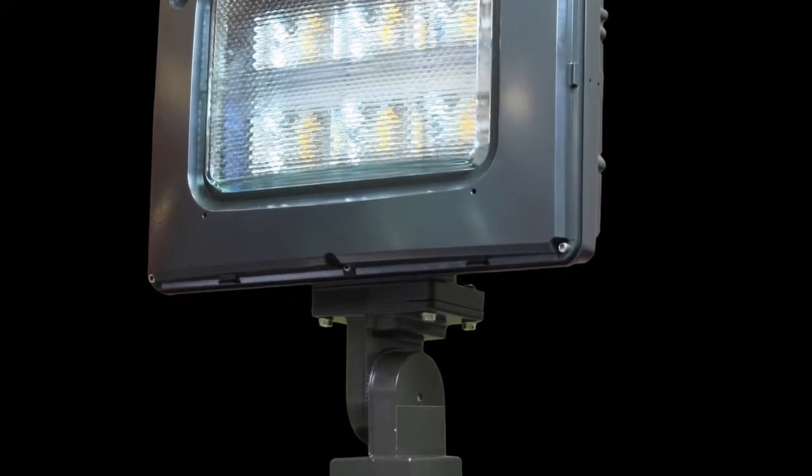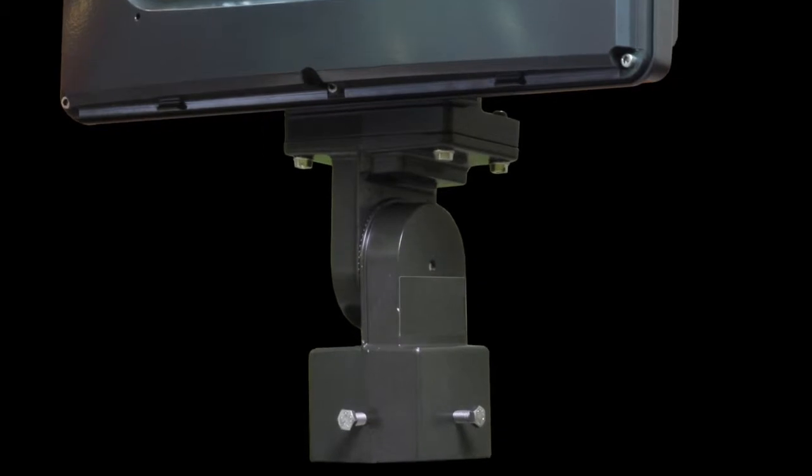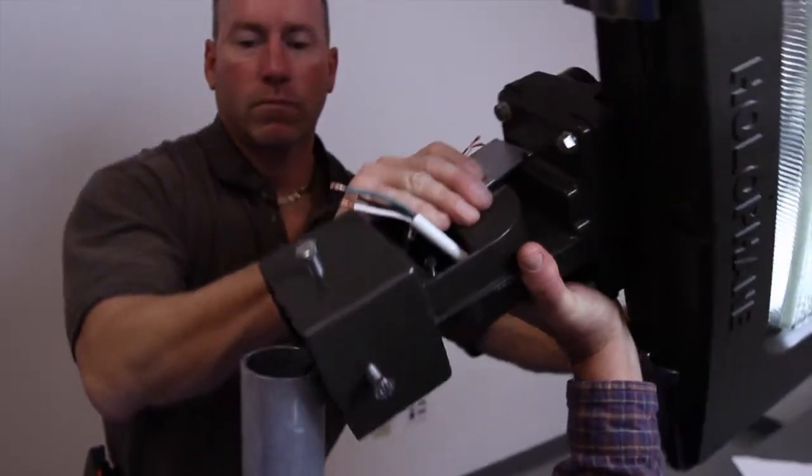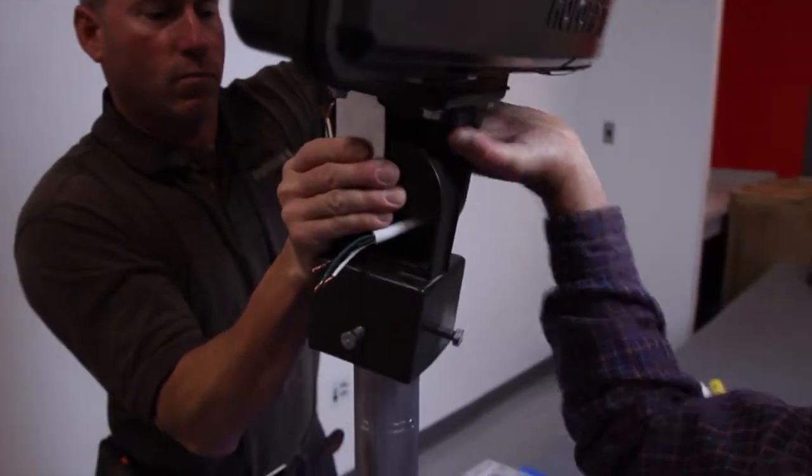When installing the Predator LED tenon mount configuration with knuckle wiring chamber, start by feeding the wires into the wiring chamber, then place the fixture on the pole top tenon.